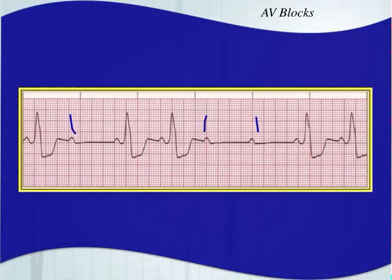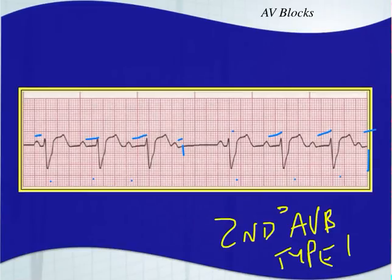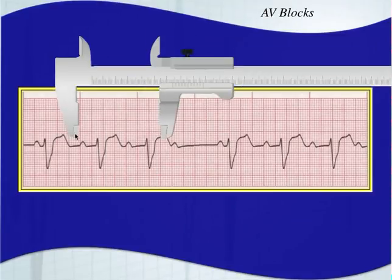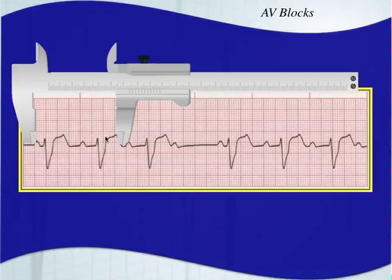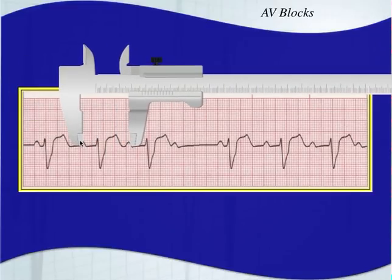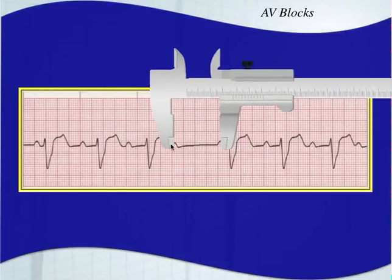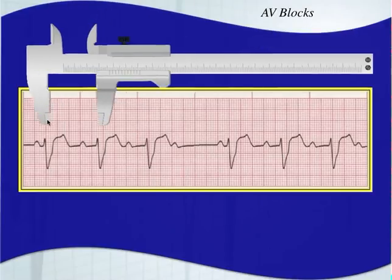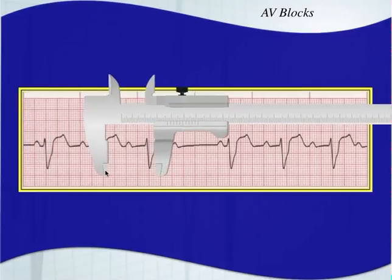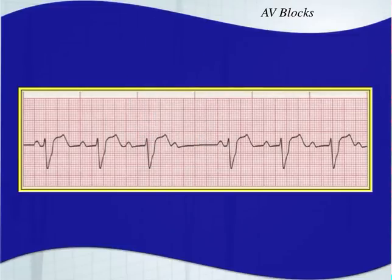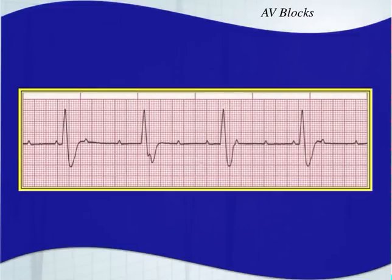Looking at the previous Wenckebach example: P-to-P intervals stay the same, but PR intervals prolong. Your R-to-R changes — you have an R wave, then no R wave at the dropped beat. That's a clear way to tell the difference between a complete heart block and anything else.